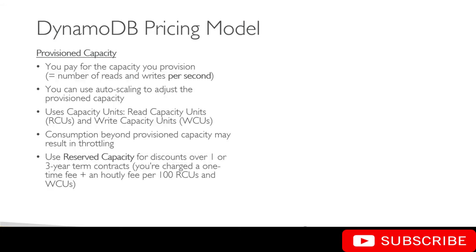Along with provisioned capacity, you can also use what is called reserved capacity. That's something where you can purchase your provisioned capacity in bulk for a period of one to three years, and then you get a huge discount. You're charged a one-time fee, and then you pay an hourly fee per 100 RCUs and WCUs — read capacity units and write capacity units. So if you can predict your table's requirements for the next one or three years, you can definitely reduce your DynamoDB bill by using reserved capacity on top of provisioned capacity.